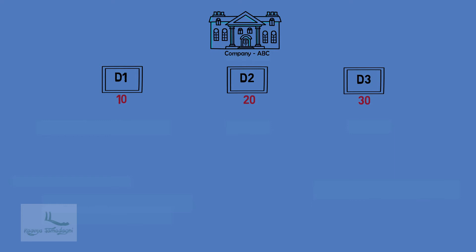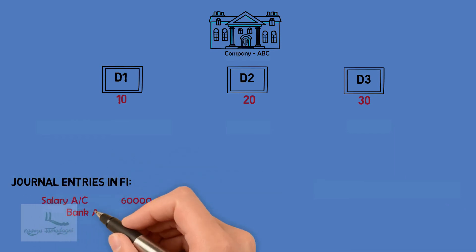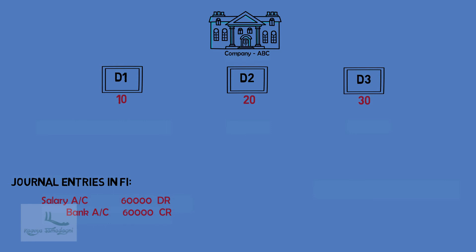To capture this transaction in Financial Accounting, we make the journal entry: Salary Account debit 60,000 and Bank Account credit 60,000. From the management perspective, they cannot identify spending based on individual departments by just looking at this single transaction.